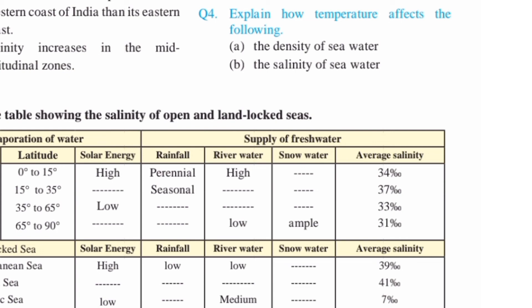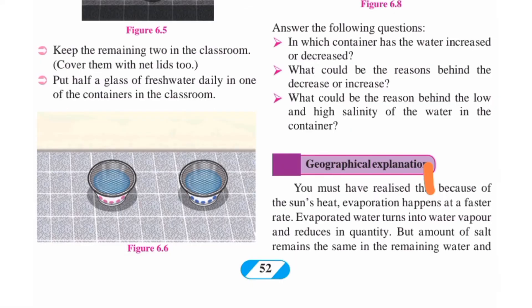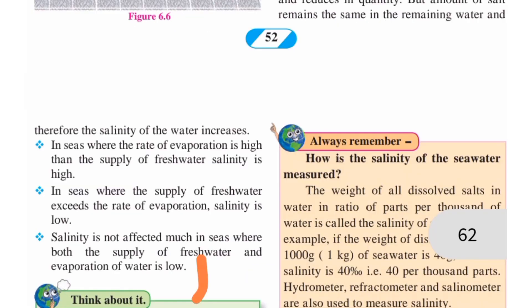F) The salinity of seawater — the answer is on page 52. Because of the sun's heat, evaporation happens at a faster rate. Evaporated water turns into water vapor and reduces in quantity, up to where it says water is low.